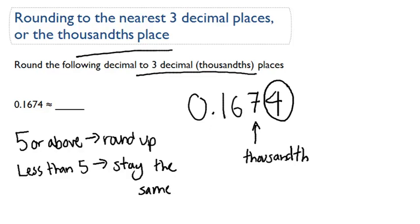All right, in this case, 0.1674. Four is the number we care about, the number we're looking at to figure out if we're rounding up or staying the same. In this case, four is less than five.